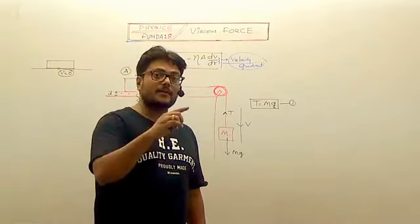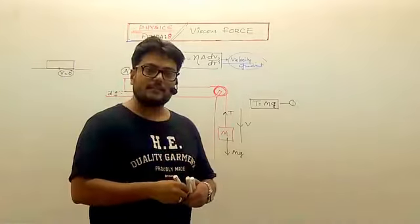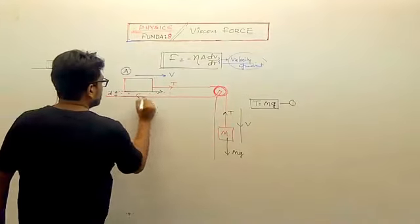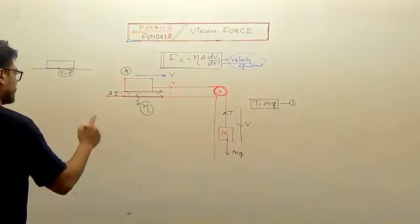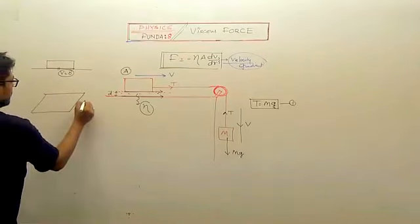There can be infinite layers between this surface and that surface, but I'm talking about only two layers: one in immediate contact with the block and the second one in contact with the table. This is the diagram you might have seen in books, even in chemistry class 11th NCERT in states of matter.